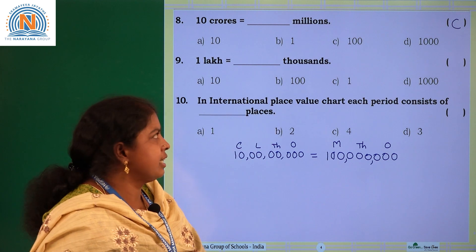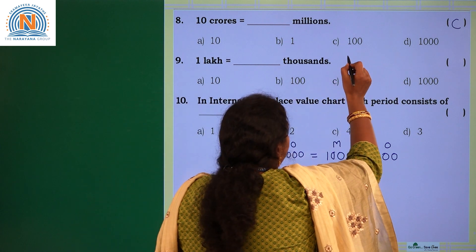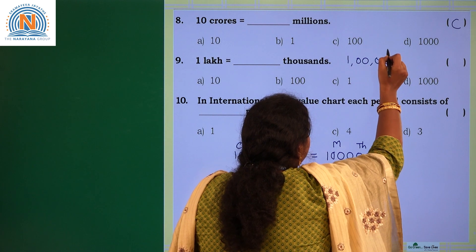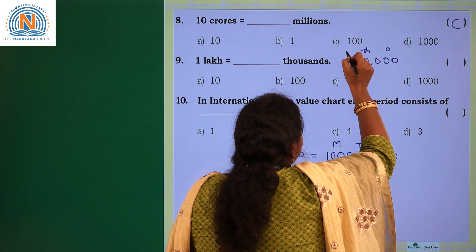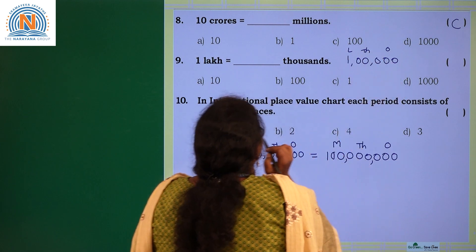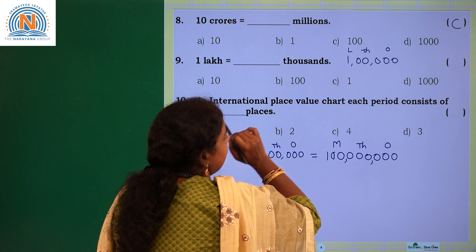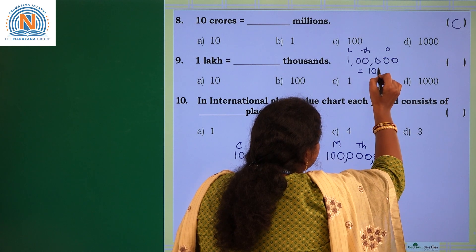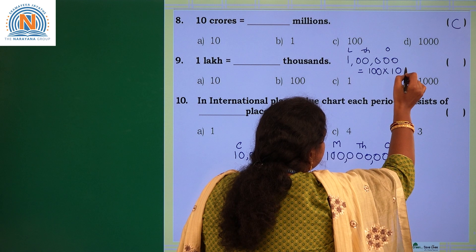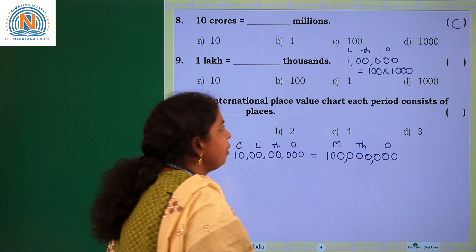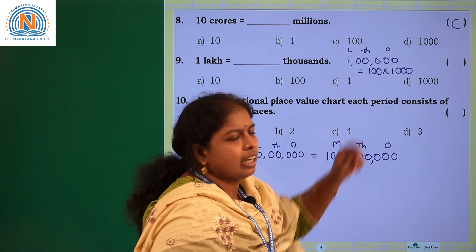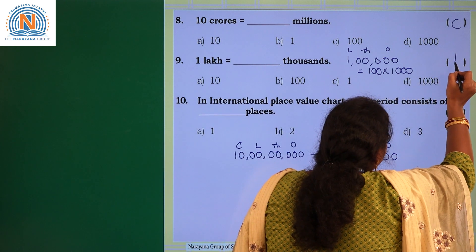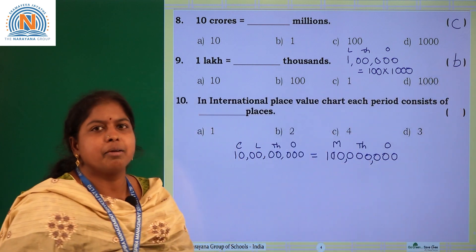Next: 1 lakh equals dash thousands. Let's write 1 lakh. In Indian periods: ones, thousands, lakhs. 1 lakh can be written as 100 × 1000, so there are 100 thousands in 1 lakh. Choose option B, which has the number 100.